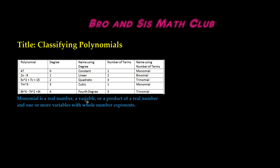You can name a polynomial based on its degree or the number of monomials it contains. From our previous videos, we know that a monomial is a real number, a variable, or a product of a real number and one or more variables with whole number exponents.